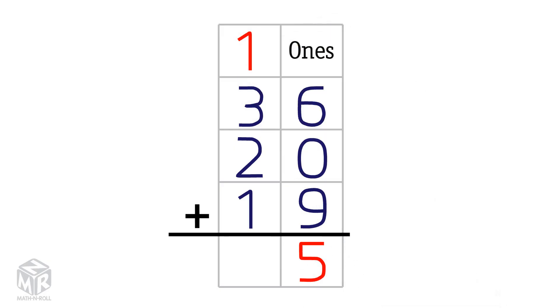Now we add the tens. 1 plus 3 plus 2 plus 1 equals 7. So 36 plus 20 plus 19 equals 75.